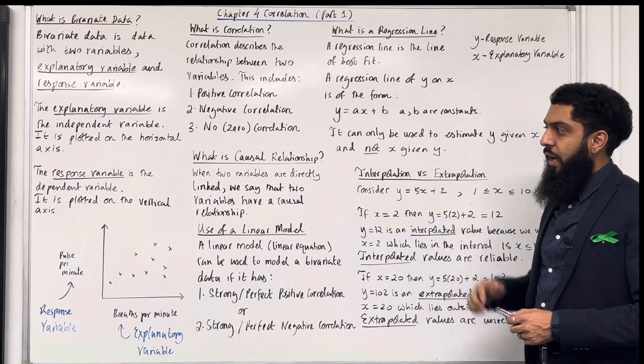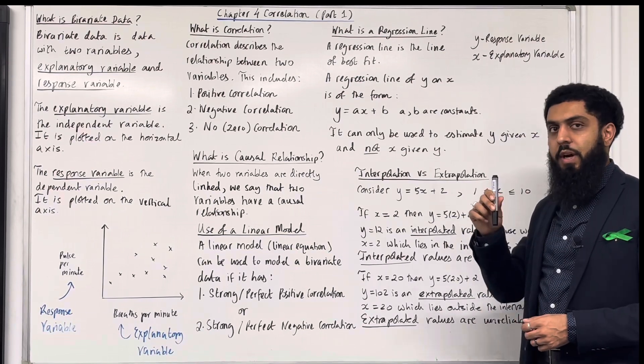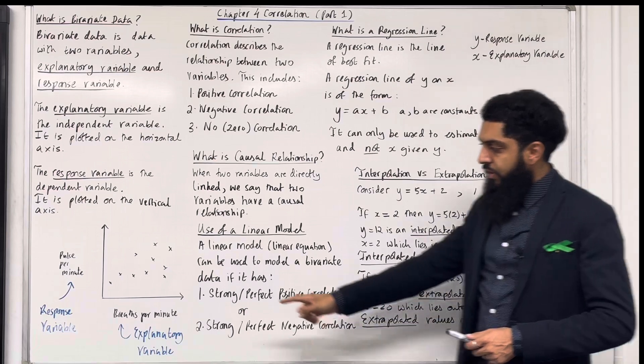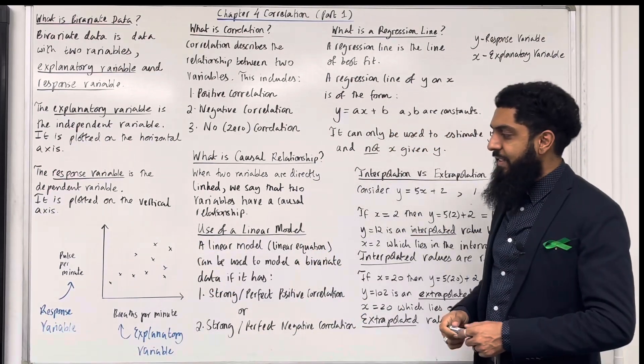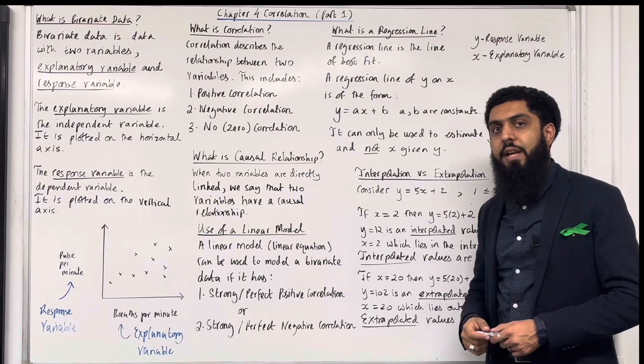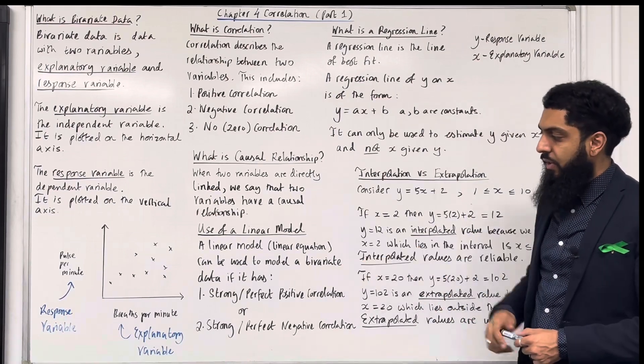The response variable is the dependent variable. It is plotted on the vertical axis. On the horizontal axis, we have breaths per minute over here. Breaths per minute is the independent variable. In A-level maths, we call the independent variable the explanatory variable.